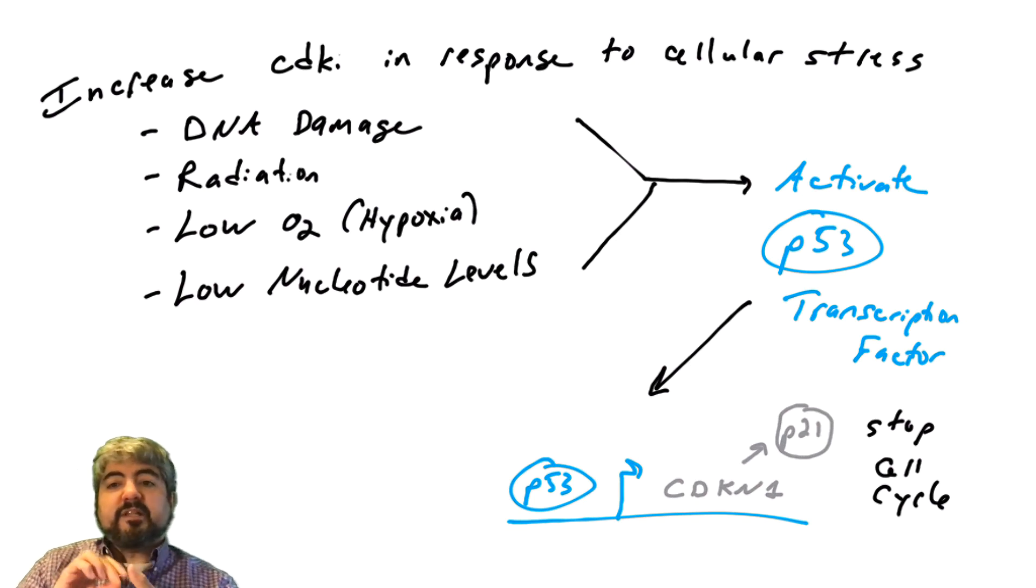So the gene that produces the P21 protein is regulated by this transcription factor called P53. And P53 can be activated in response to cellular stress, like DNA damage, radiation, low oxygen levels, also known as hypoxia, low nucleotide levels. So if the cells detect that they are under some stress, that it would not be smart to try to go through the whole cell cycle and replicate the DNA, maybe because the DNA is damaged, or there's not enough oxygen to produce enough ATP to power the cell through the cell cycle, or there aren't enough nucleotides, those will all activate P53.